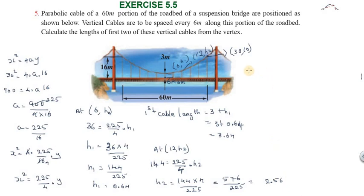So the second cable length equal to 3 plus 2.56, giving a total of 5.56 meters. Therefore, the first cable length is 3.64 meters and the second cable length is 5.56 meters. Thank you, friends.